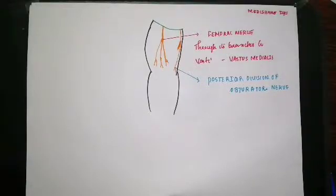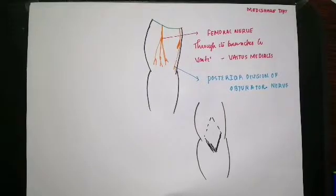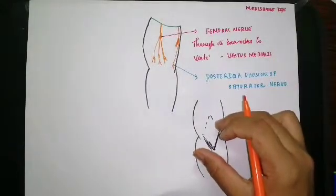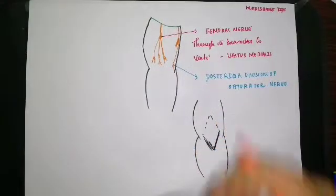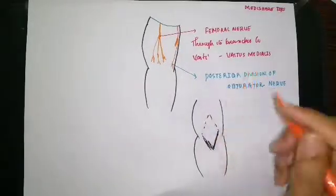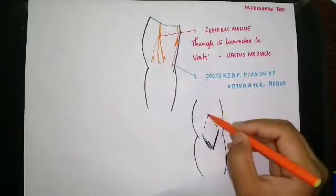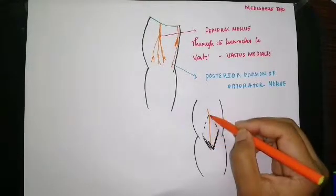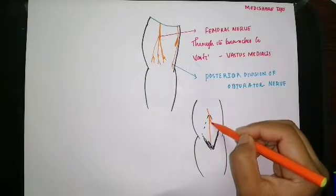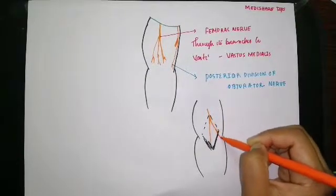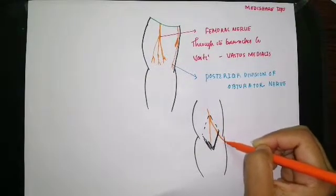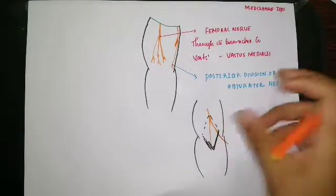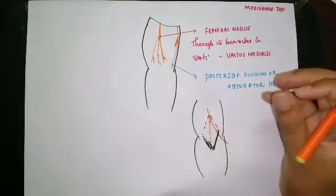Now we go into the posterior aspect. On the posterior aspect you can see a diamond-shaped depression — that is the popliteal fossa. At the superior angle, the sciatic nerve divides into two terminal branches: one is the tibial nerve, which passes downward, and the other is the common peroneal nerve, which passes to the lateral angle and winds around the neck of the fibula. The sciatic nerve gives branches to the knee joint through these terminal branches.